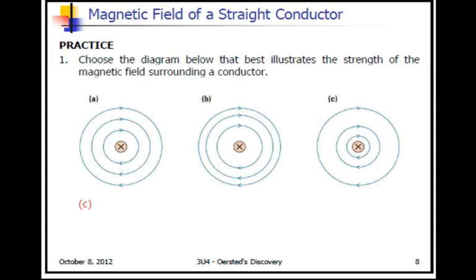Let's choose the diagram below that best illustrates the strength of the magnetic field around a conductor. In this case, C is best because we are trying to show that there is a stronger field, so the lines are closer towards the conductor and weaker farther away. Whereas A has everything equidistant, implying the field is the same throughout, and B implies there is a weaker field closer and a stronger field farther away.